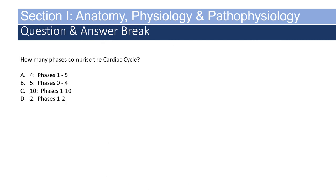How many phases comprise the cardiac cycle? A — 4, phases 1 through 5. B — 5, phases 0 through 4. C — 10, phases 1 through 10. D — 2, phases 1 through 2. If you answered B, 5 phases — phases 0 through 4 — you are correct.